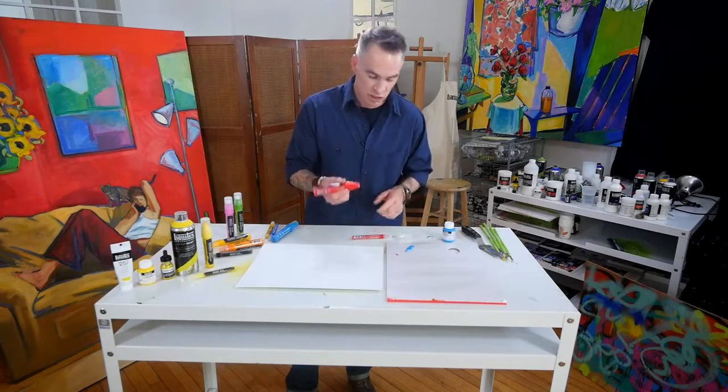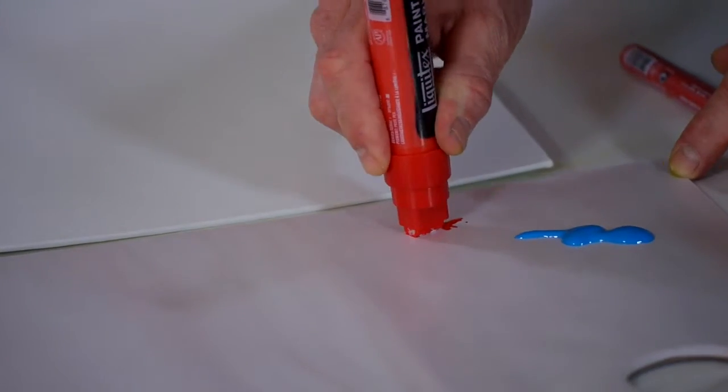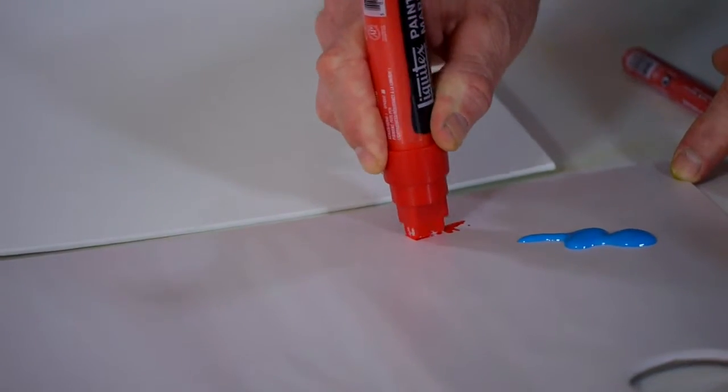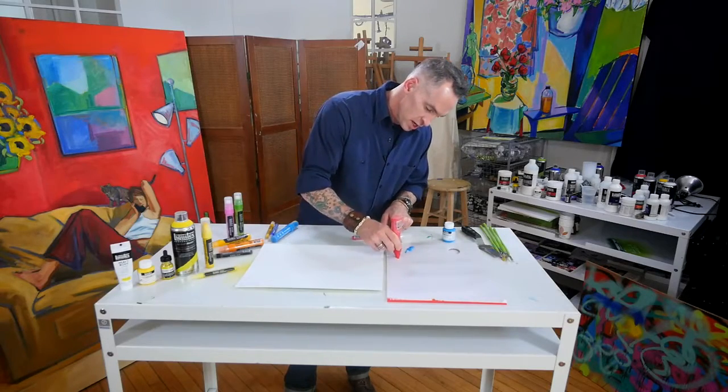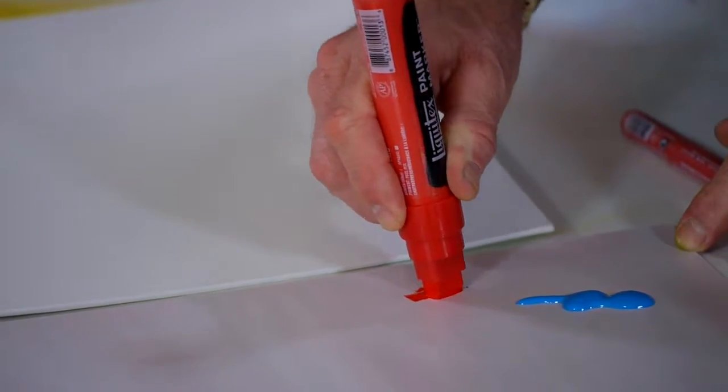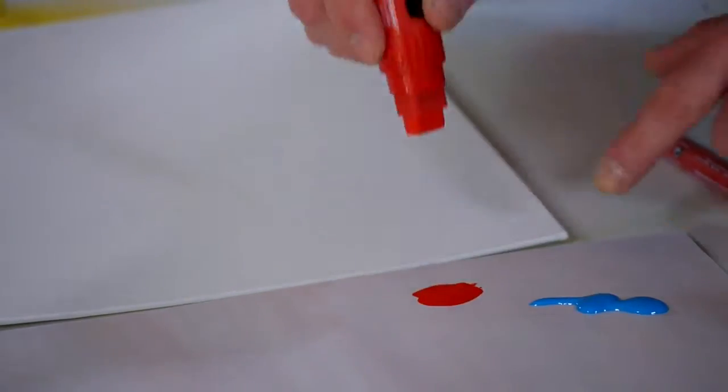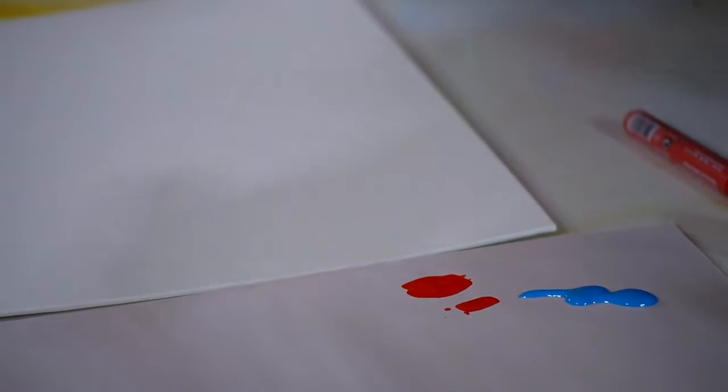Now I'm going to purposely flood it to show you what happens and how we can fix that mistake. I'm pressing it many times and you'll see it's flowing down more and more. What can happen is I'm starting to get a puddle of color here, and when I do that too much, some of that can drip just like it did.